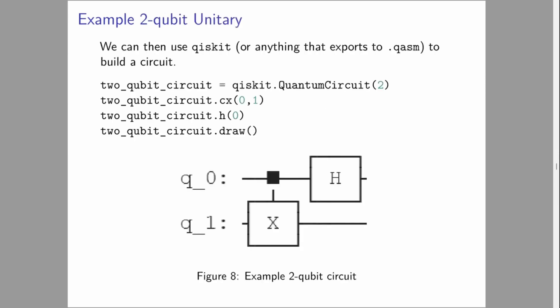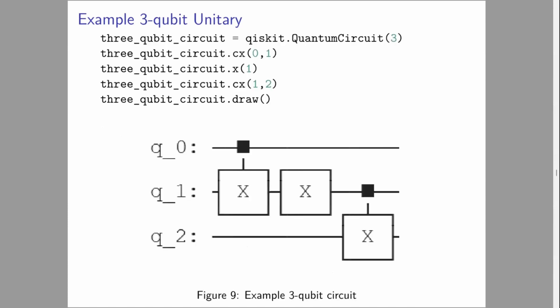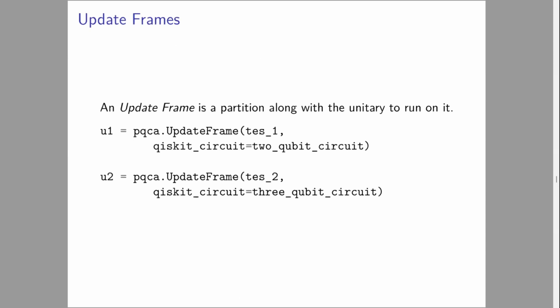We now need some unitaries to apply. This is using Qiskit. The package handles anything that understands the QASM file format. This is a two qubit circuit. We're going to play a controlled X operation from qubit 0 to qubit 1, and then a Hadamard on qubit 0. This is a screenshot of what happens if you want to control that circuit. Likewise, we want a three qubit circuit for our three qubit cell. This is a controlled X from 0 to 1, a NOT gate on qubit 1, and then a controlled X from 1 to 2. An update frame is a partition and the unitary you're going to run with it.